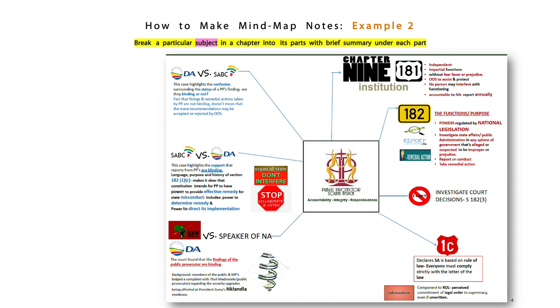Coming to example two, we've made another variant of the mind map. This is a little bit more visual with pictures about the public protector. There are several elements that get studied in that chapter on the public protector, a chapter nine institution. The functions, the purpose, the investigative court decisions, etc.